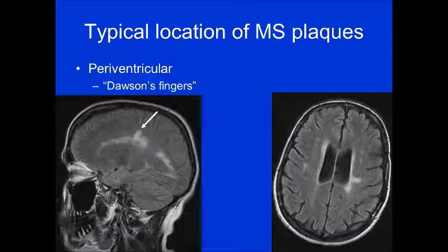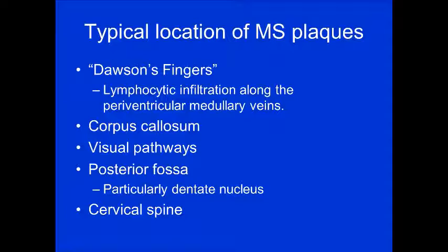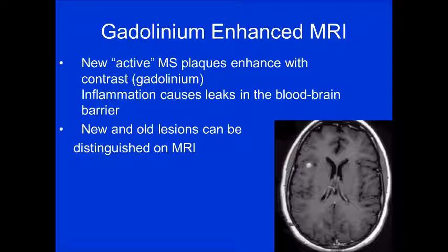You really have to look for areas typical for MS, and the most typical is periventricular Dawson's fingers. If your institution doesn't use sagittal FLAIR, talk to your program director — it's tremendously helpful when you're on the fence. Typical locations are periventricular along the periventricular medullary veins, the corpus callosum, along the visual pathways posteriorly, the posterior fossa particularly the dentate nucleus, and the cervical and thoracic spine.